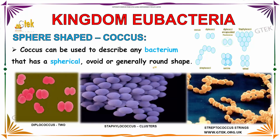Now we are going to see about sphere-shaped coccus. Coccus can be used to describe any bacterium that has a spherical, ovoid, or generally round shape. Here you can see Diplococcus, which contains two coccus. Staphylococcus is in cluster formation. The last one is Streptococcus — it is in a string shape, so it is called Streptococcus strings.